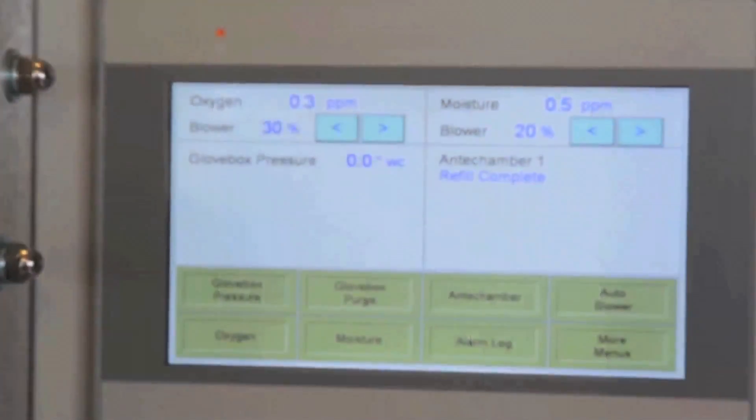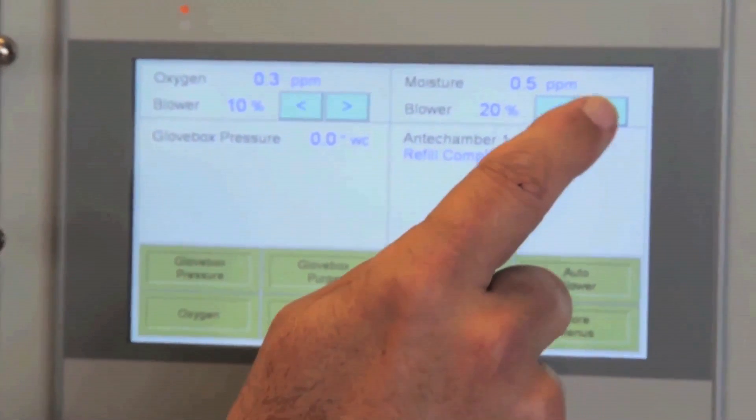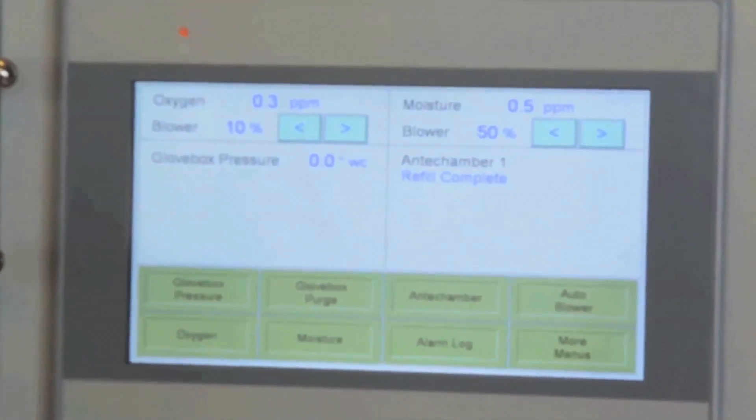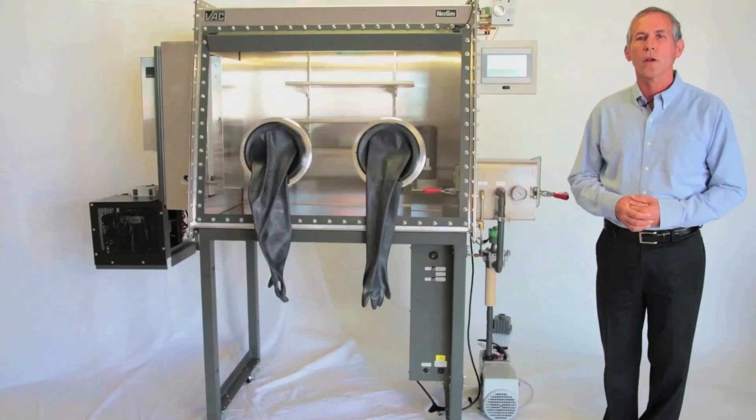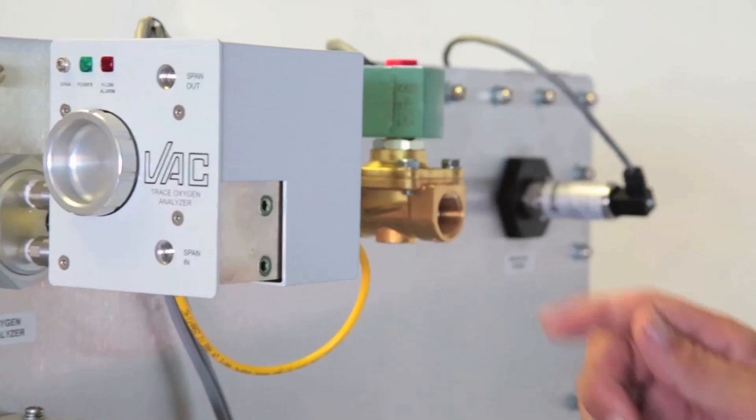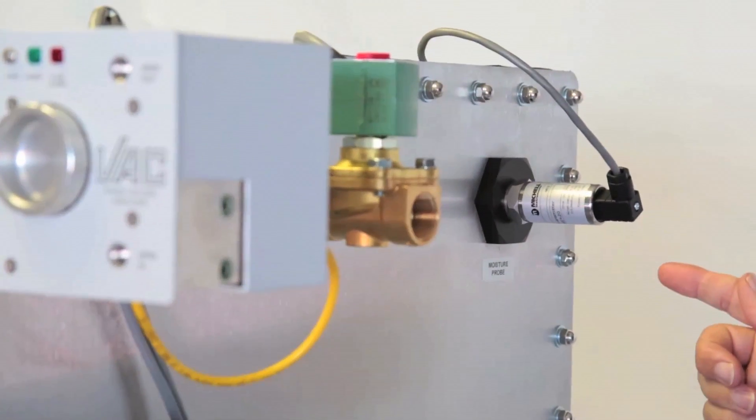The user-friendly touchscreen panel makes monitoring and controlling the NextGen simple. In addition to our standard automatic glove box pressure and purge functions, the NextGen allows simultaneous circulation blower speed control, which will automatically change the blower speeds based on readings from the optional oxygen and moisture analyzers.